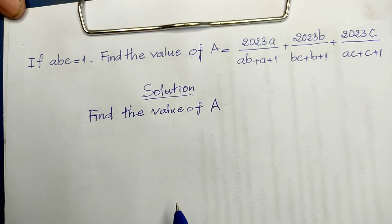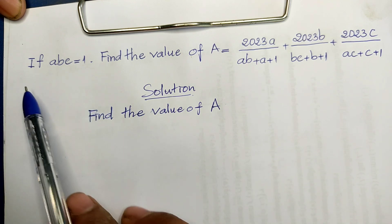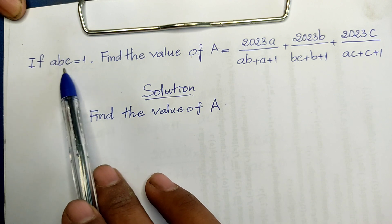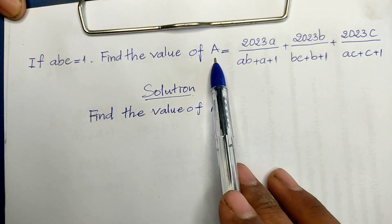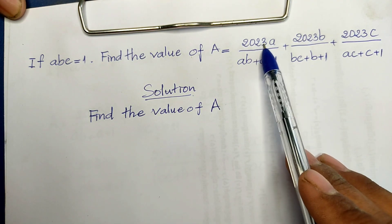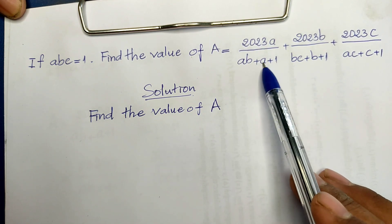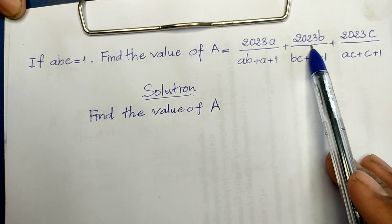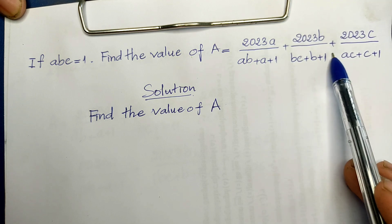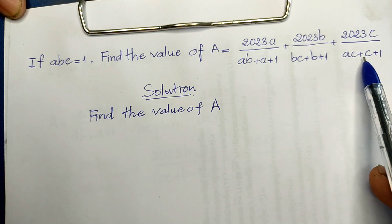Hello everyone, welcome to my YouTube channel. Today I have one exercise on this paper: if a multiplied by b multiplied by c is equal to 1, find the value of 2023a divided by (ab + a + 1), plus 2023b divided by (bc + b + 1), plus 2023c divided by (ac + c + 1).